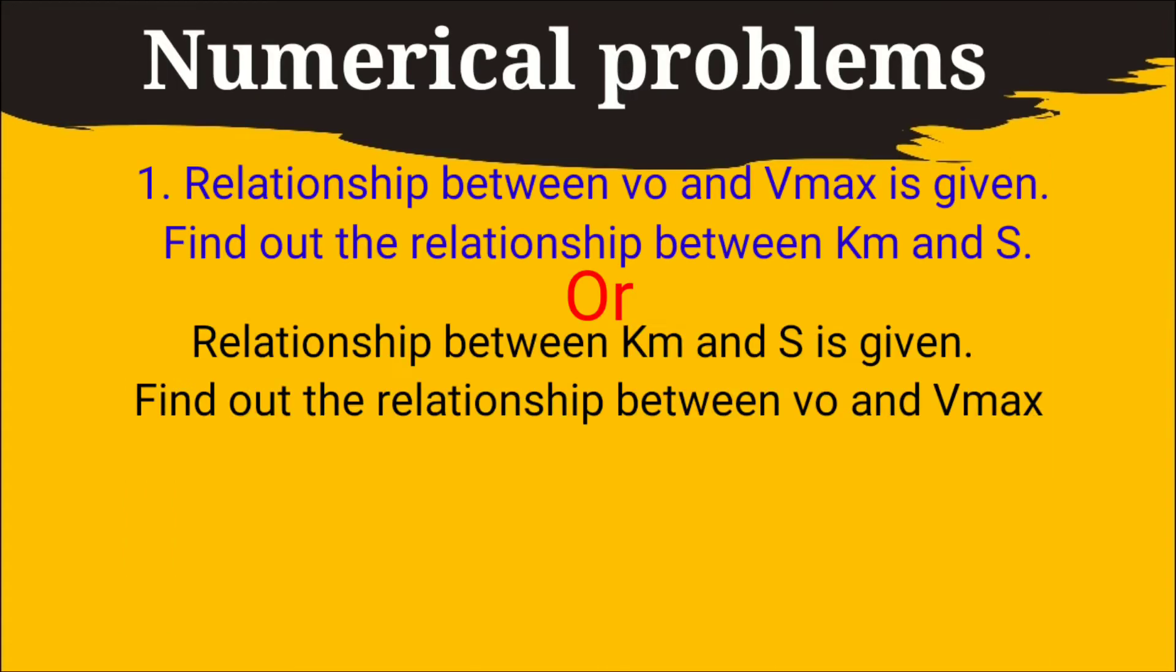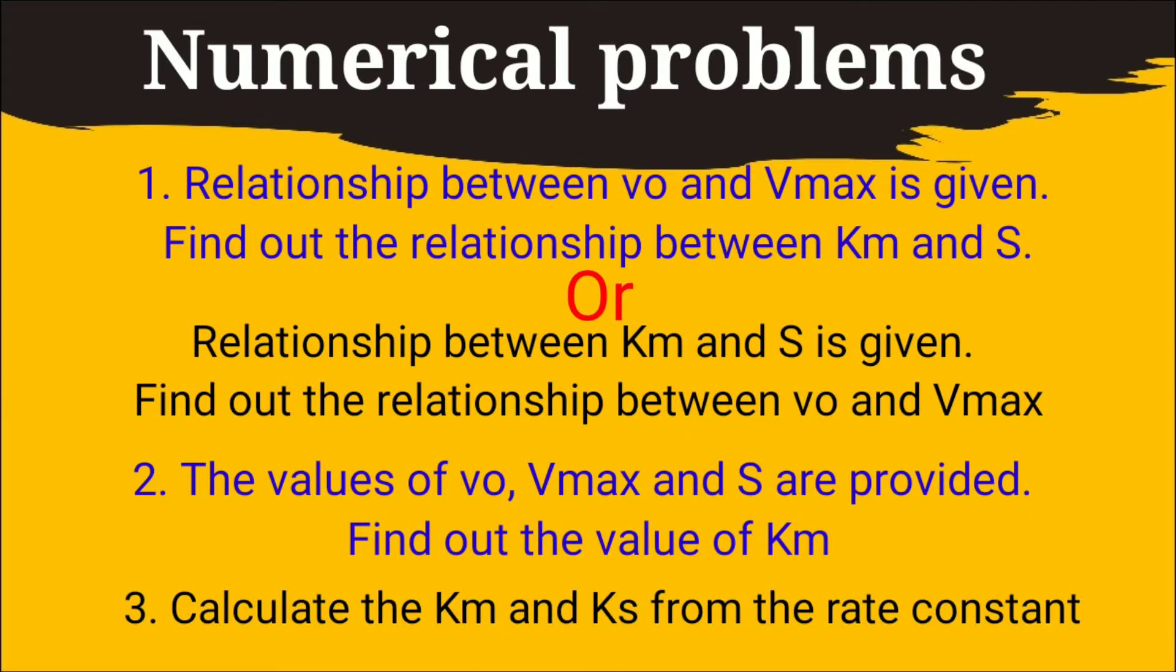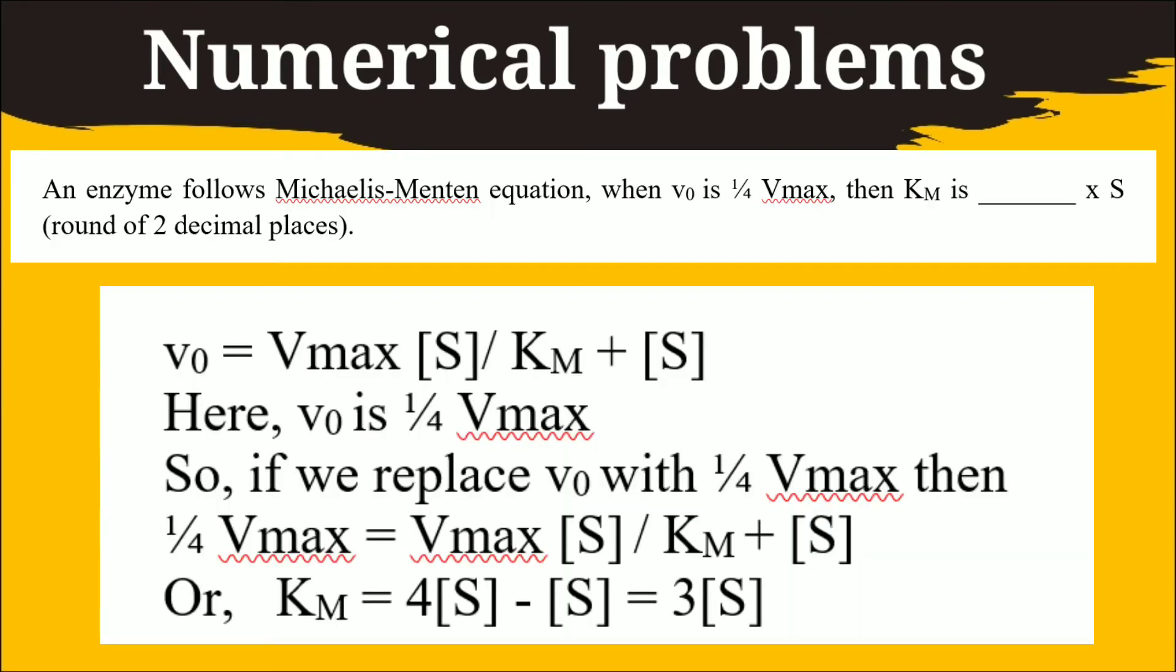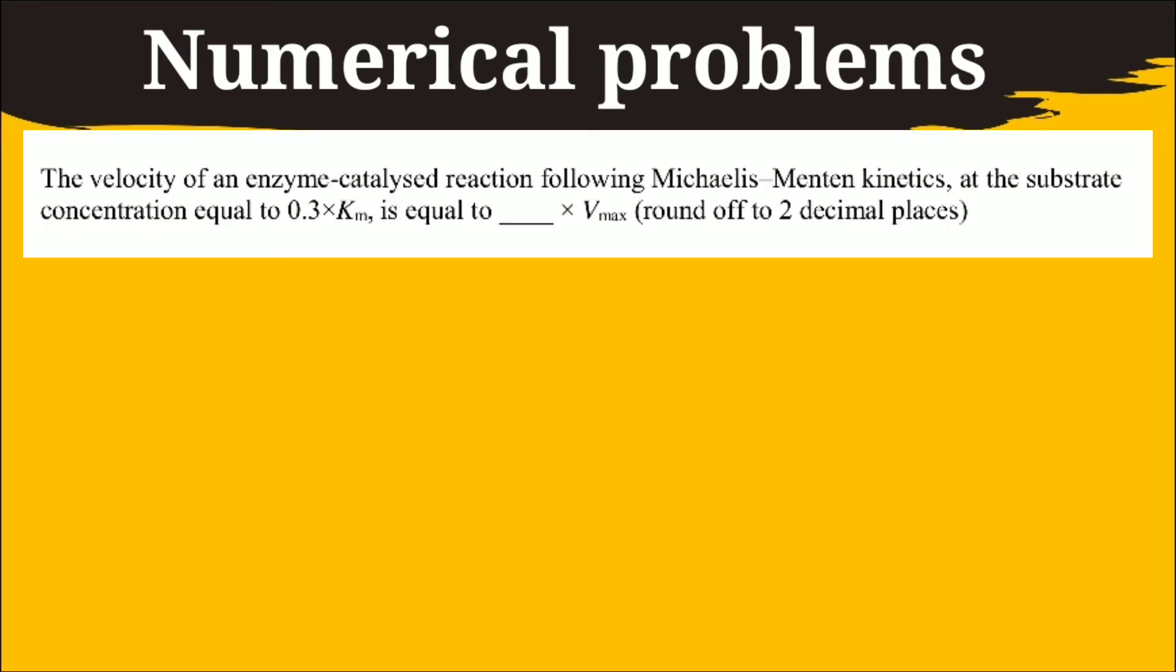You can expect three different types of numerical problems from this area. Here you have to find out the relationship between Km and S. So in Michaelis-Menten equation I have replaced the value of V0 with Vmax and solved the problem. You can also convert it into fraction as well as in percentage.